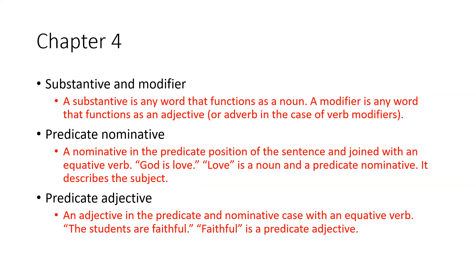Predicate nominative: a nominative in the predicate position of the sentence, joined with an equative verb. For example, 'God is love' — 'God' is a noun and the subject, while 'love' is a noun and the predicate nominative; it describes the subject.